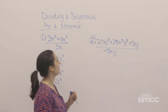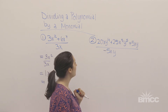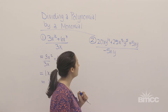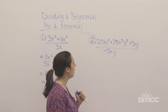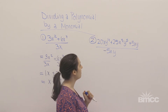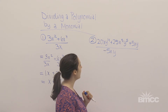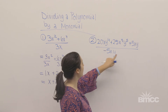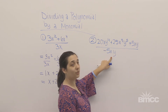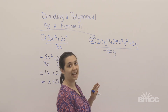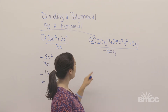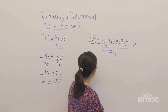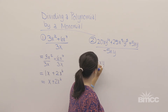Now let's look at our second example. Our second example says 20xy to the 4th plus 25x to the 5th y to the 5th plus 5xy, divided by negative 5xy. You may want to just immediately cancel out these two terms, but that is not going to give you the correct solution. So what we're going to do is similar to the first example and break this up into three separate fractions.